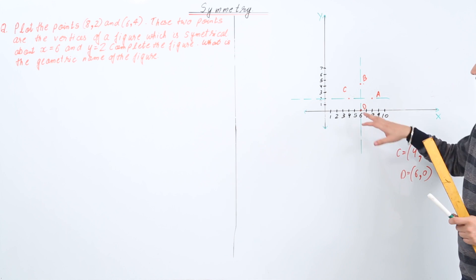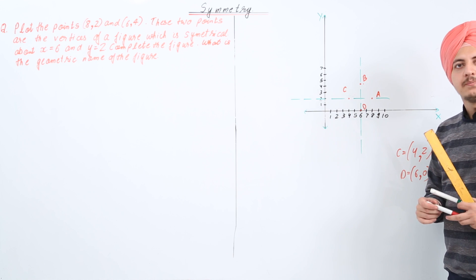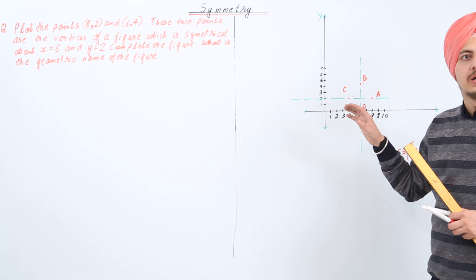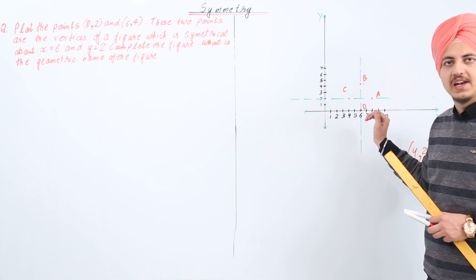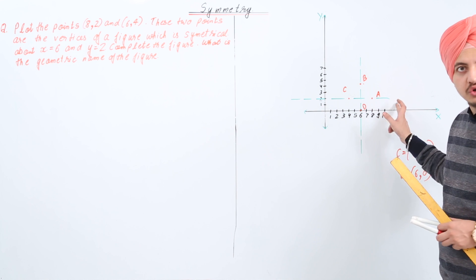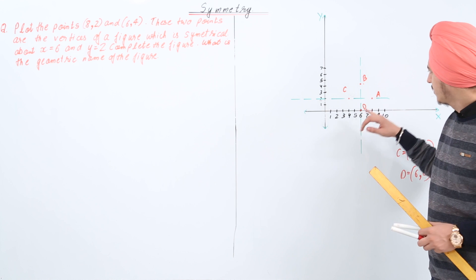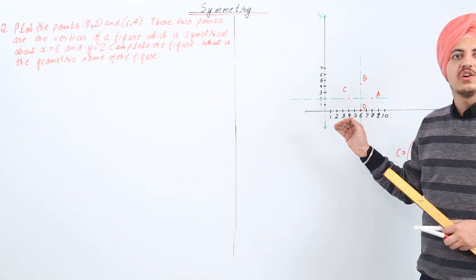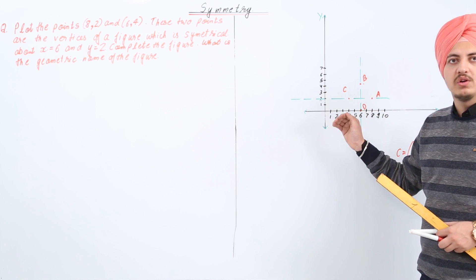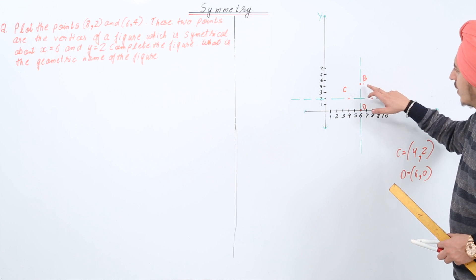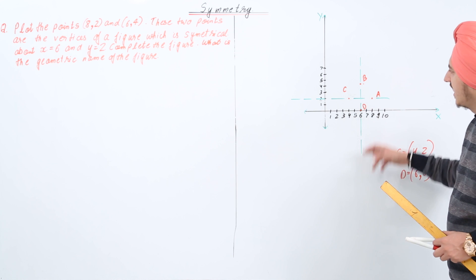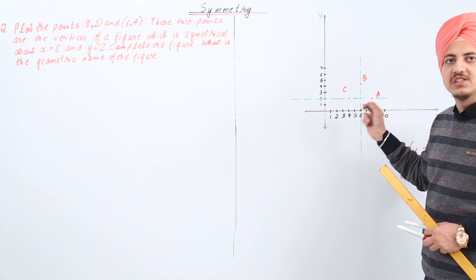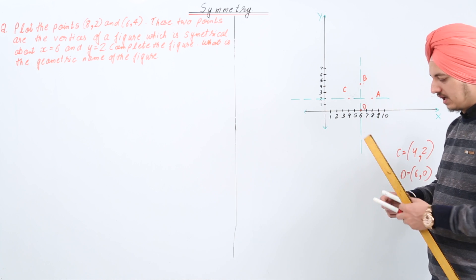Point A is irrelevant to the symmetry line y = 2 because point A lies on that line — we cannot take the mirror image of a point about a line it already lies on. Similarly, point B is irrelevant to the line x = 6 for the same reason, because it lies on that line.